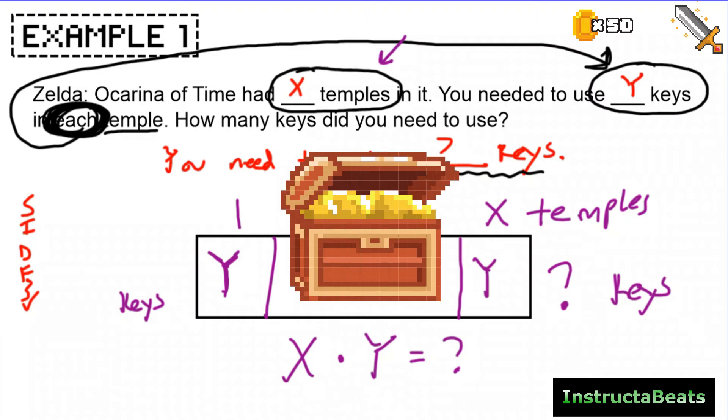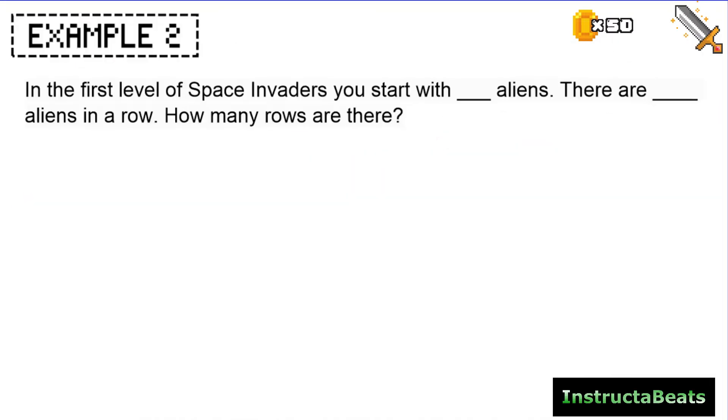So I would say we figured this out. We got the treasure box. Here we go. Let's go to our next level and try one more. In the first level of space invaders, you start with blank aliens. There are blank aliens in a row. How many rows are there? Now if you're a teacher, you may know this because you played it growing up, but don't ruin it for everybody else. So again, this is a word problem. I'm going to start with my sides check. And again, we're not going to be solving this, but we are going to be figuring out what operation to do.